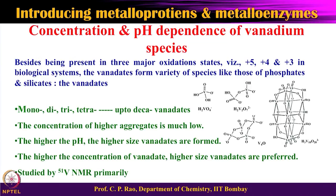The +5 vanadate is d0 and is therefore ideal for NMR studies, while the +4 vanadium is d1 with one unpaired electron, making it excellent for EPR studies. Regarding the vanadate formation, the aggregated or condensed vanadate species depend on both vanadium concentration in the +5 oxidation state and on the pH.